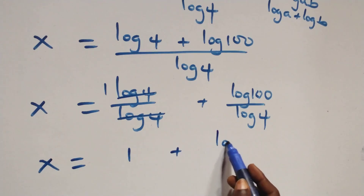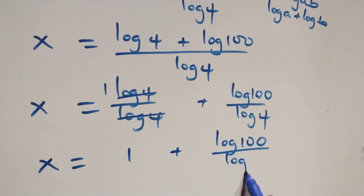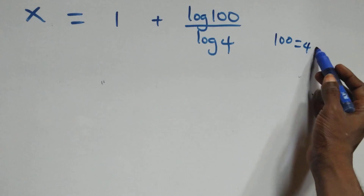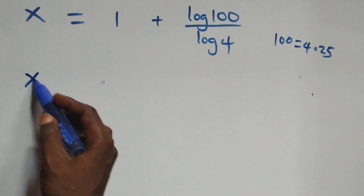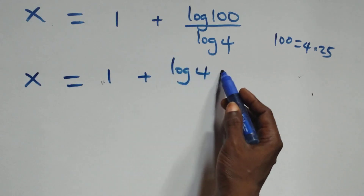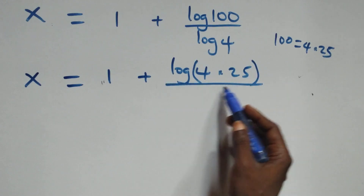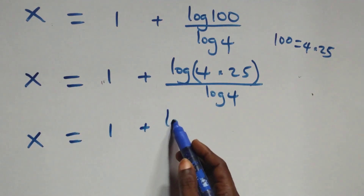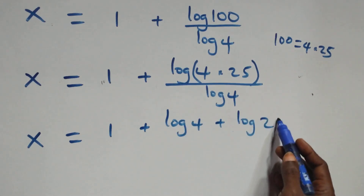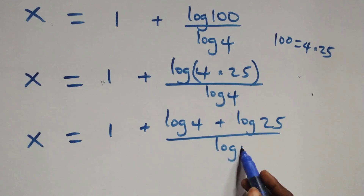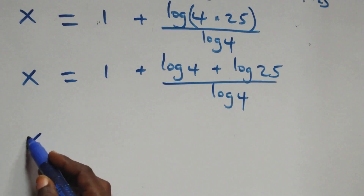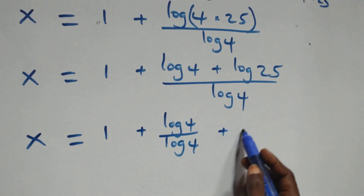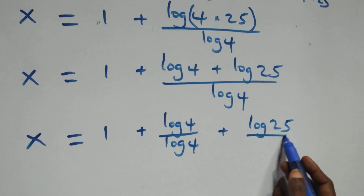So what we have here becomes x equals to 1 plus log 100 over log 4. We can write 100 as 4 times 25, giving x equals to 1 plus log of 4 times 25 over log 4.